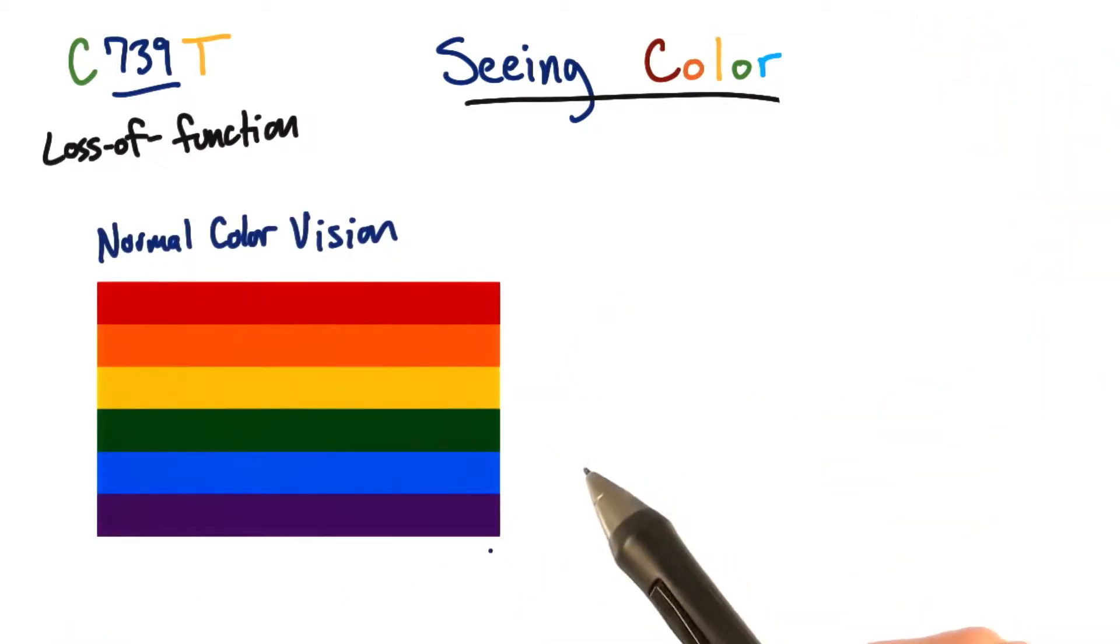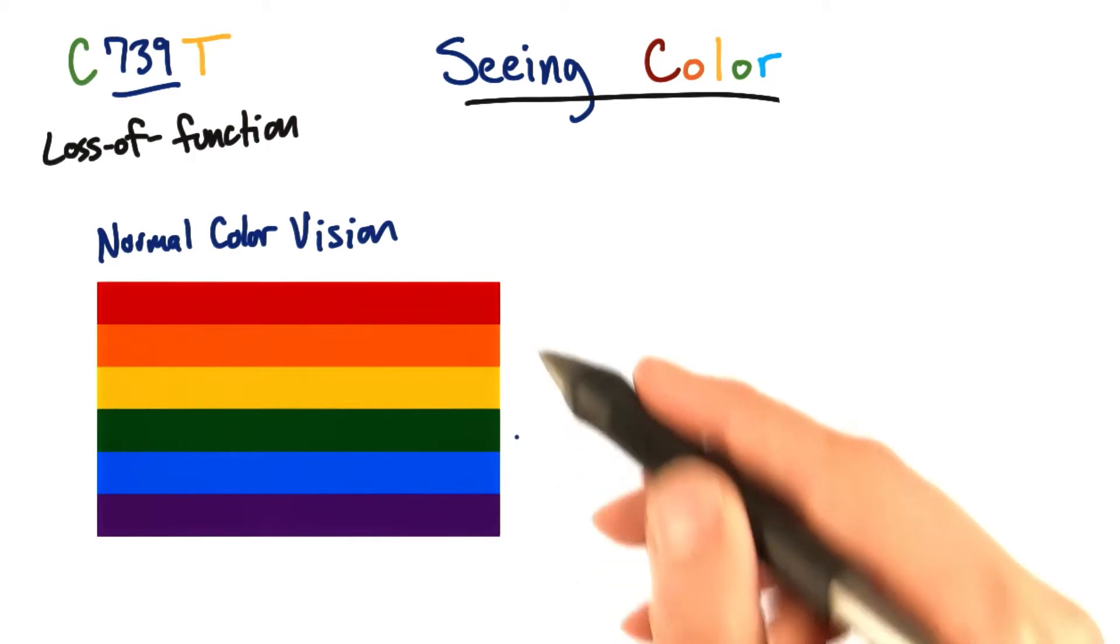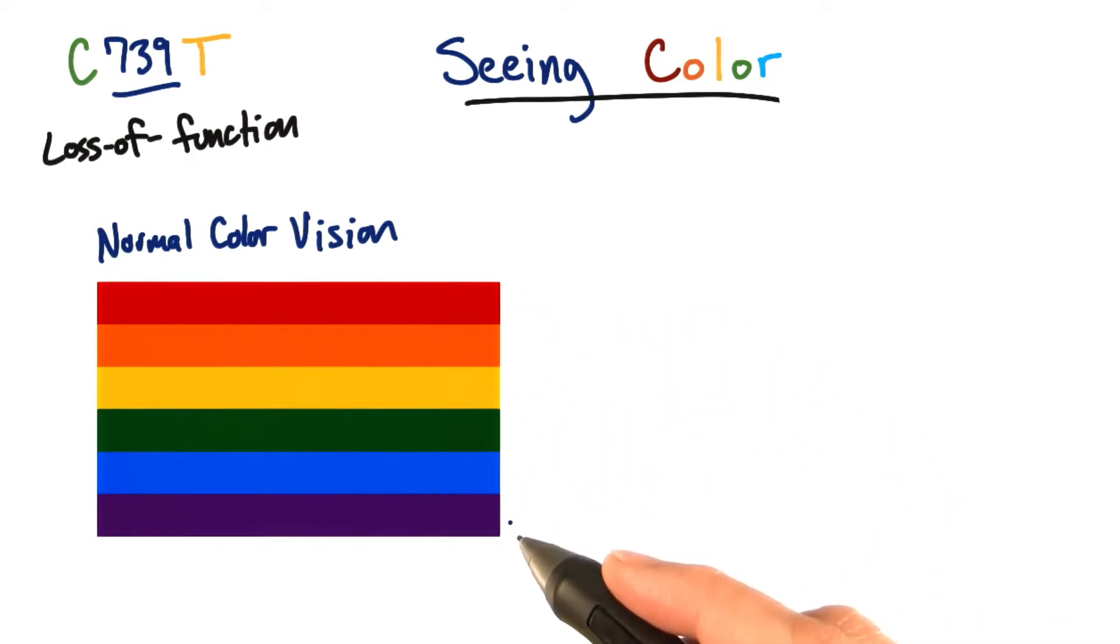Take this rainbow of colors, for example. If you have normal color vision, you should be able to distinguish these six individual panels from each other as red, orange, yellow, green, blue, and purple or violet.